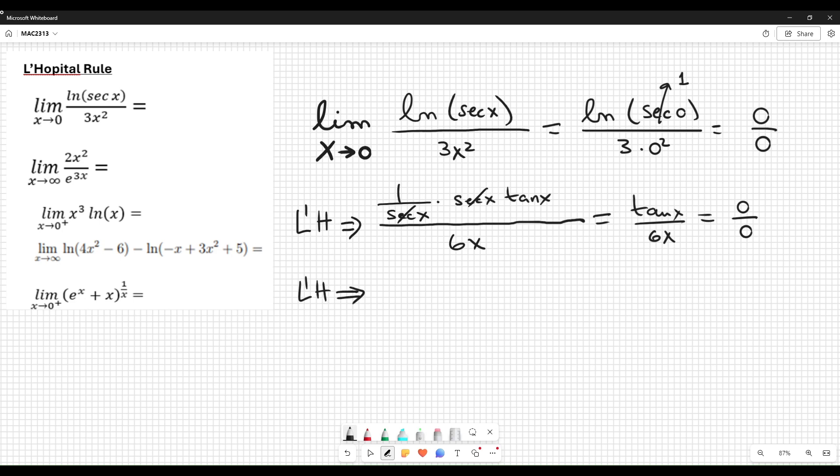So, derivative of the tangent is secant squared. And derivative of 6x is 6. Now I suppose, in this moment, you plug it in. Secant squared 0 is 1. 1 squared is 1 over 6. The answer is 1 over 6.